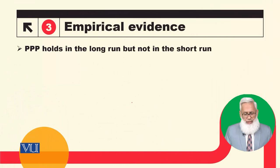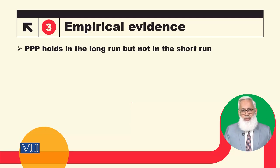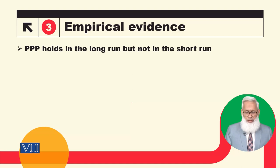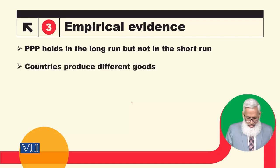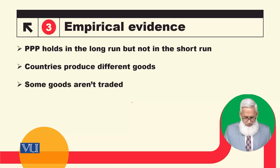What is the empirical evidence? Purchasing power parity holds in the long run but not in the short run. یہ purchasing power parity وہ short run میں hold نہیں کرتی — PPP does not hold in the short run. Countries کیوں نہیں hold کرتی؟ اس کی reasons میں: countries produce different goods.